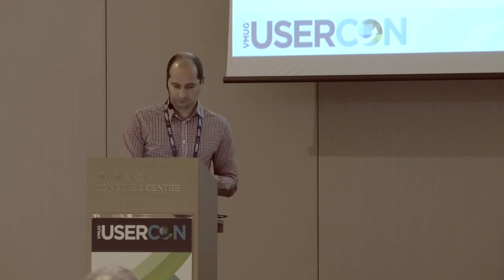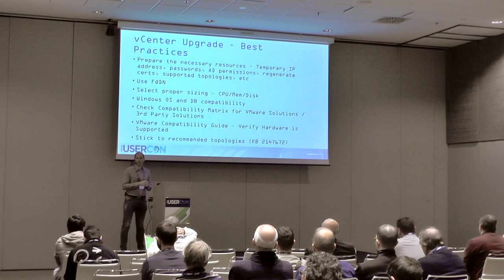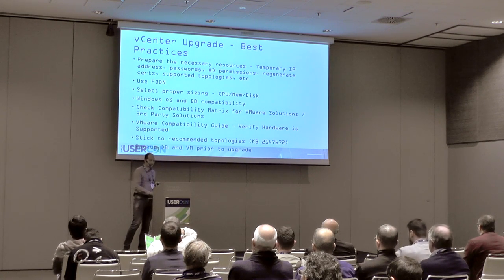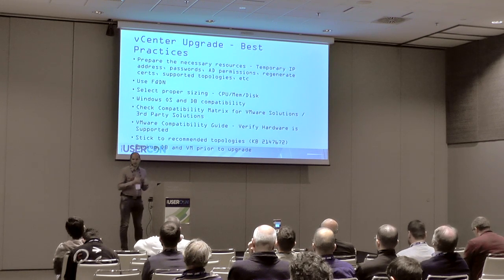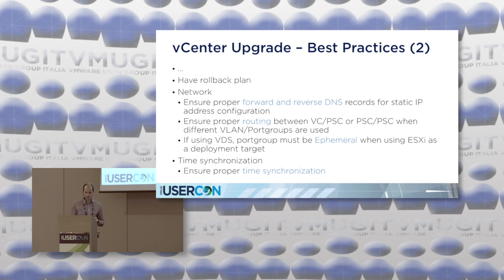Check product compatibility and supported hardware upfront. Review recommended topologies before the upgrade — if a topology is going to be deprecated, reconfigure your environment to a supported topology beforehand. Backup the database and VMs before your upgrade so that if something goes wrong, you can roll back to that version. Always have a rollback plan — the best upgrade plan always includes a rollback plan.